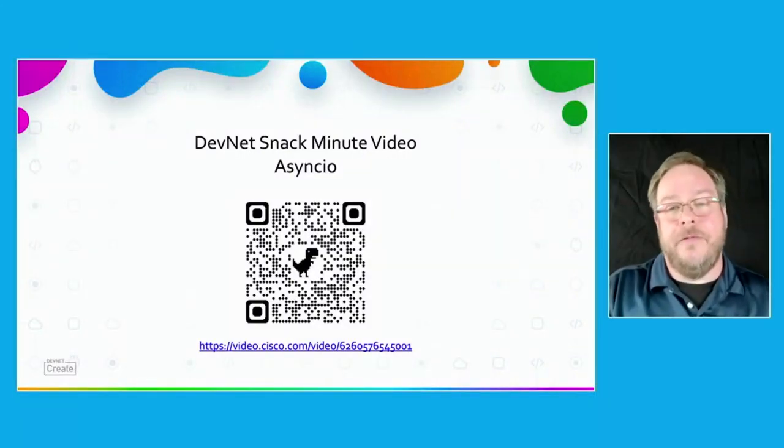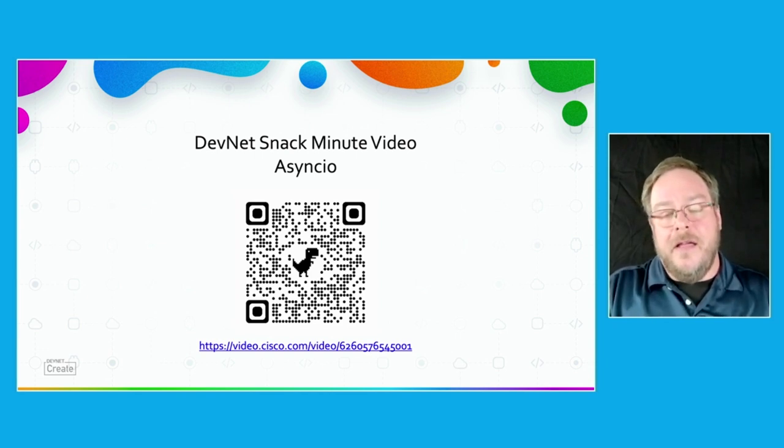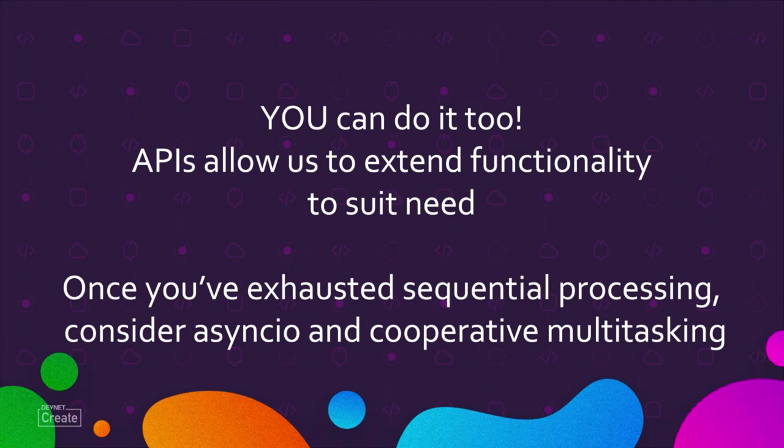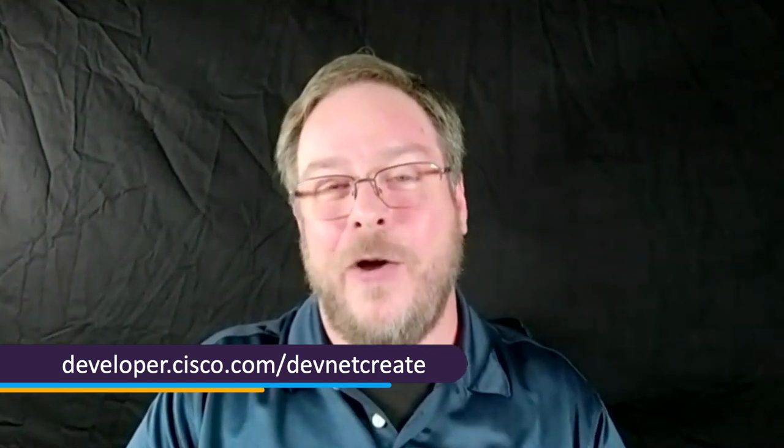If you're interested more in AsyncIO, here's another QR code and URL to the DevNet Snack Minute video we did on AsyncIO. In conclusion, I want to leave you with the thought that you can do it too. APIs allow us to extend functionality to suit need. Once you've exhausted all of your ideas around sequential processing, consider AsyncIO and cooperative multitasking, because you probably are getting tired of doing things one after the other and you've got more work to do than you can handle. Thank you for your time, and I hope to see you sometime soon at another DevNet Create.